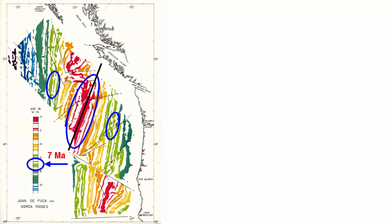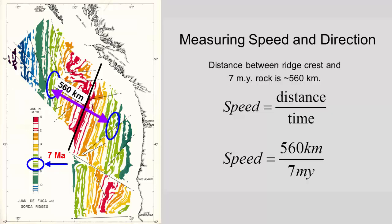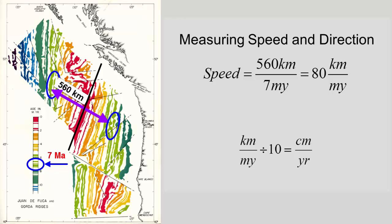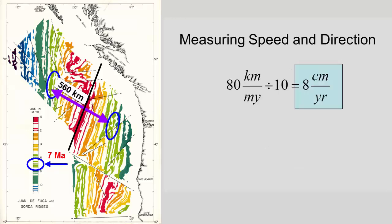So, what's the direction of plate motion? Away. And how fast on average has it been spreading? If 560 kilometers separates the rock from its origin, then it has traveled 560 kilometers in 7 million years. That's 80 kilometers per million years, or 8 centimeters per year.